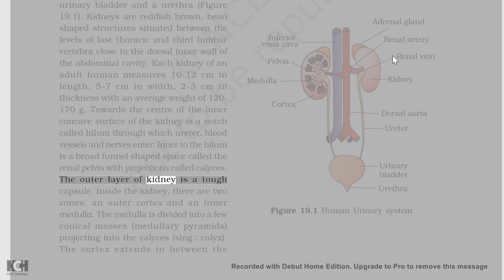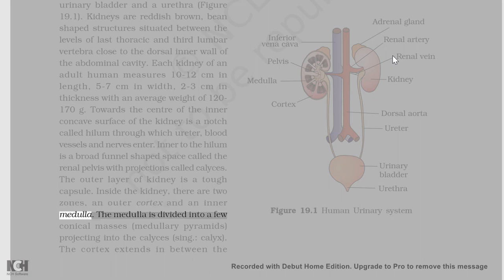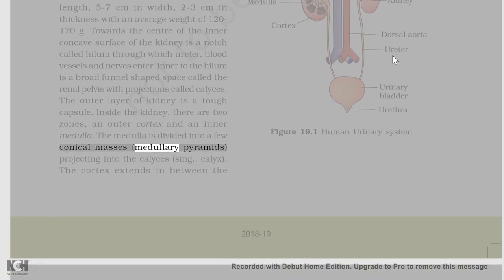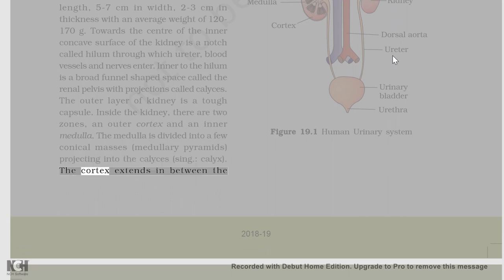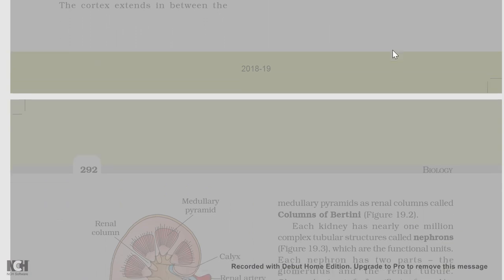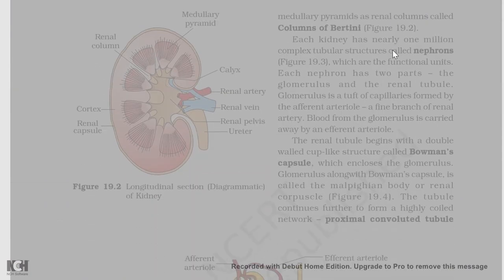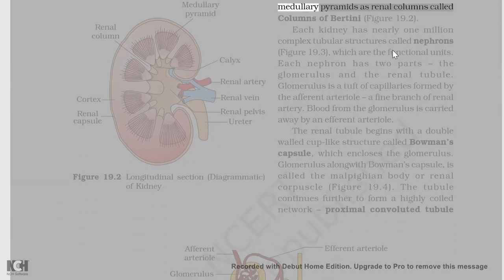The outer layer of kidney is a tough capsule. Inside the kidney, there are two zones: an outer cortex and an inner medulla. The medulla is divided into a few conical masses called medullary pyramids projecting into the calyces. The cortex extends in between the medullary pyramids as renal columns called columns of Bertini.